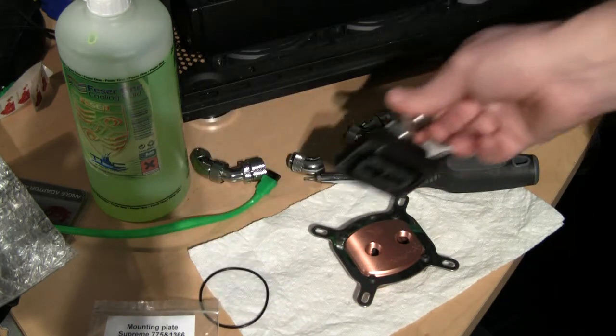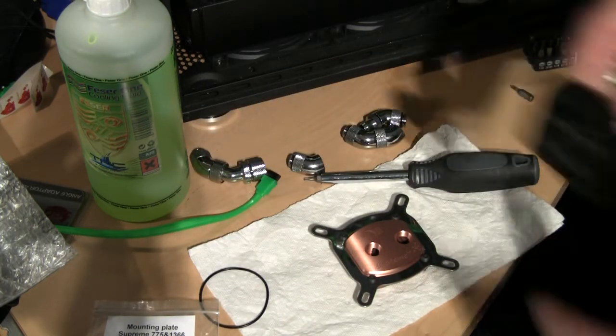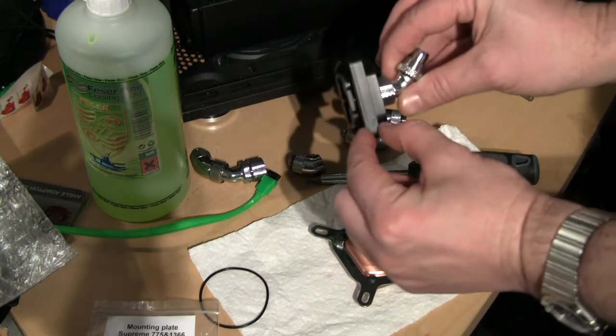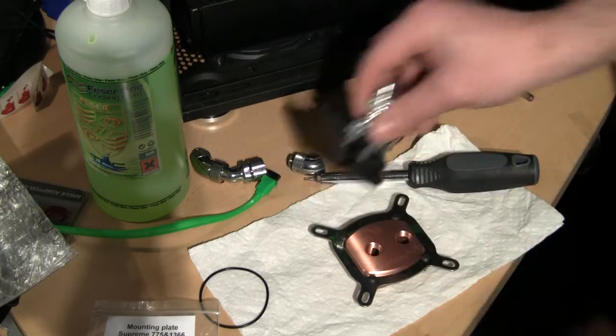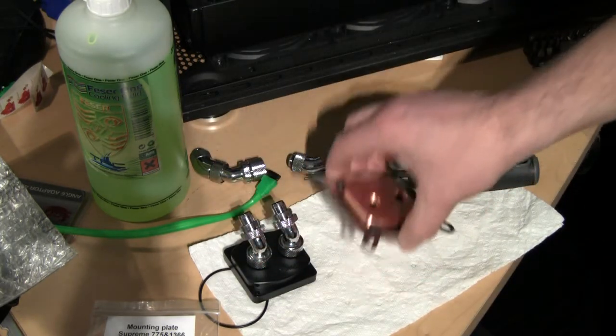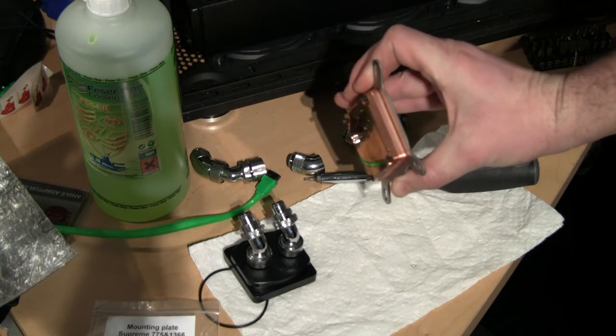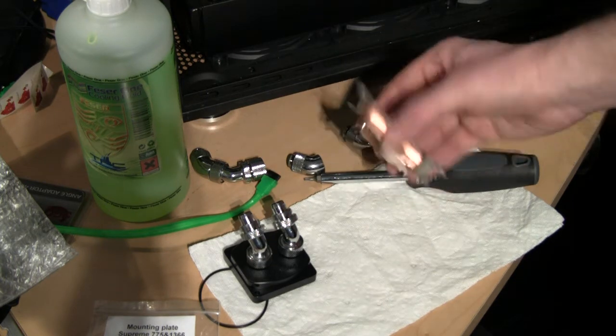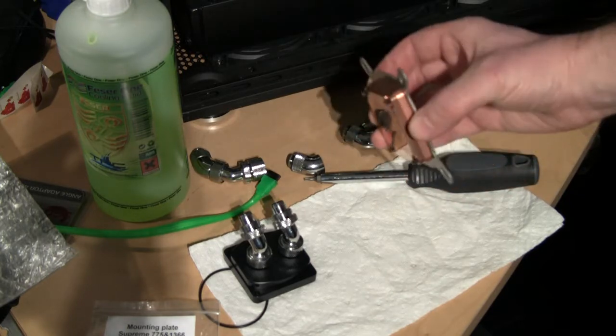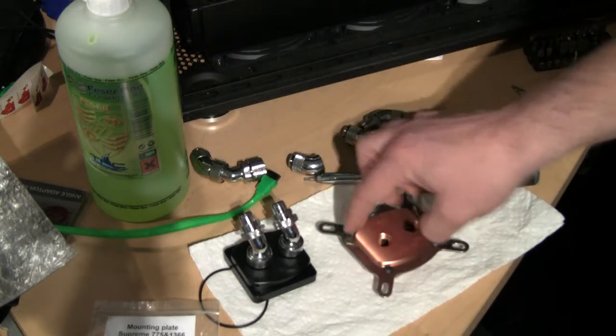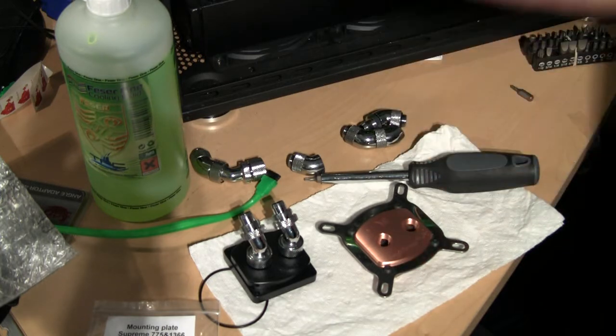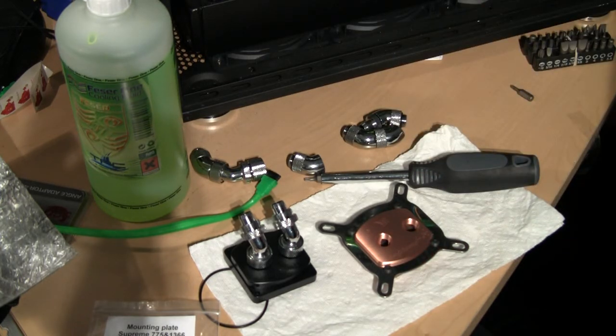So basically this is a pure mistake from EK, like an engineering mistake. You see the thickness of this acetal top is a few millimeters more than the thickness of the copper top. So basically this leads to the fact that my screw is sticking out, so I need some sort of spacers here in order to lift the screws up or shorter screws.